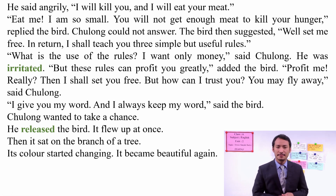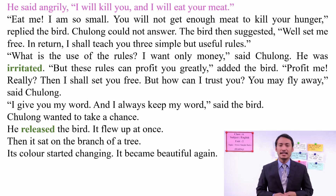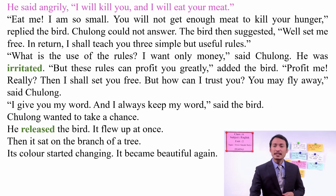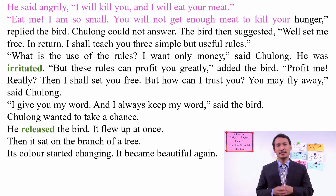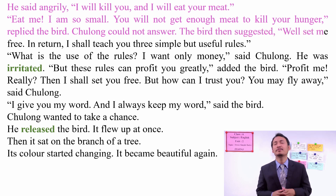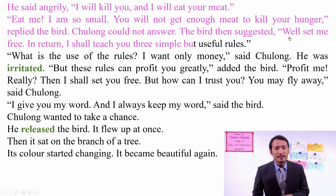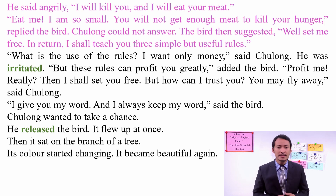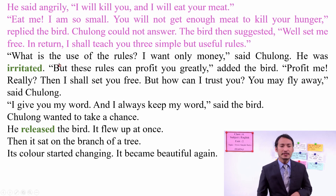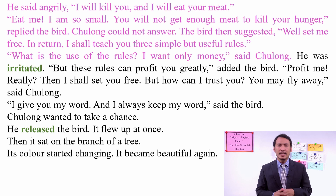Now let's look at the next paragraph. He said angrily — when the bird changed its color, he said, 'I will kill you and eat your meat.' The bird said, 'Eat me — I am so small. You will not get enough meat to satisfy your hunger.' So Chulong could not answer anything. The bird suggested, 'Set me free — in return, I shall teach you three simple but useful rules.' The bird said those rules are very important and will benefit him. But the man said, 'What is the use of the rules? I want only money.' And he was irritated.